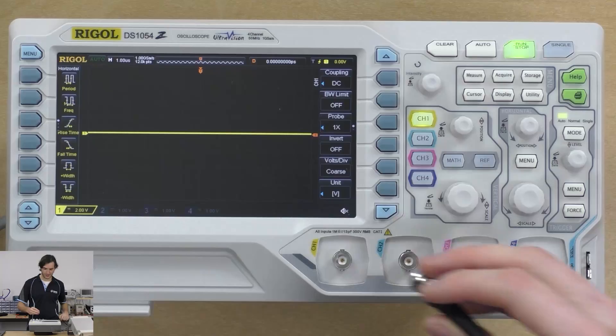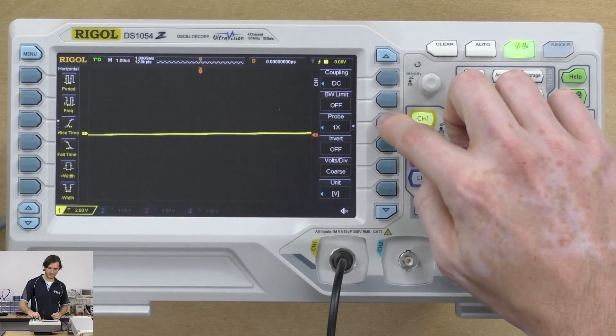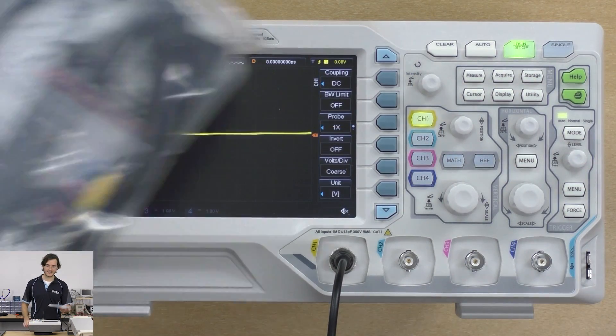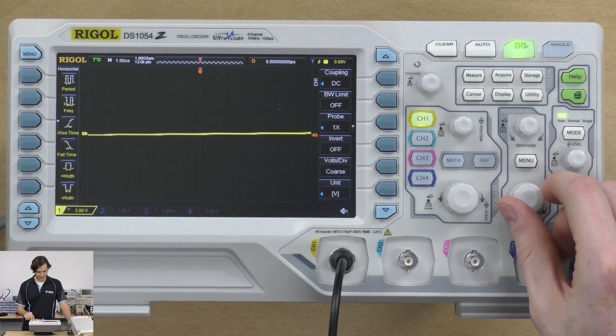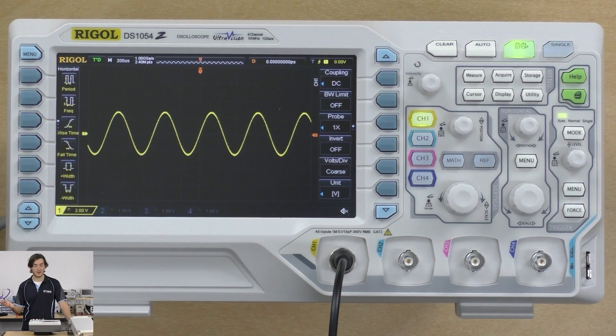I'll plug the function generator directly into channel one and I've already set the probe multiplier to one times because we're not using the ten times scope probe here, we're just using a direct connection. So we need that on one times and if I bring that time in, yep there's our two kilohertz sine wave, no worries.